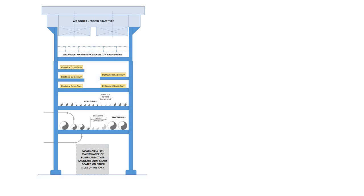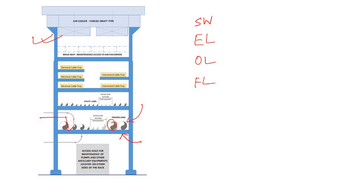Before diving into transportation analysis directly, let me recap the basic design criteria. When designing a pipe rack module beam, you need to consider different types of loading: the self-weight of the beam itself, the empty load of the pipe, the operating load of the pipe under operating conditions, and also friction load during operating condition based on the pipe's support condition.